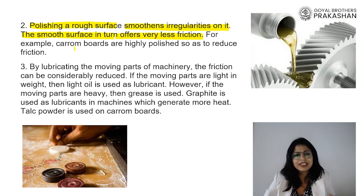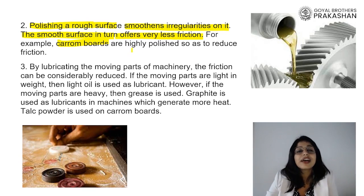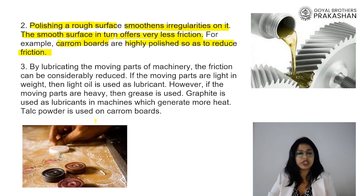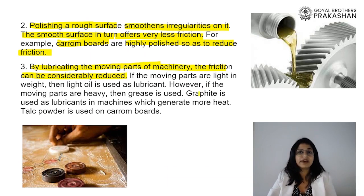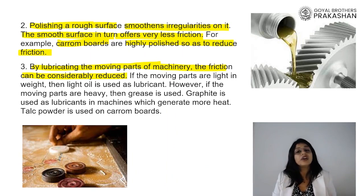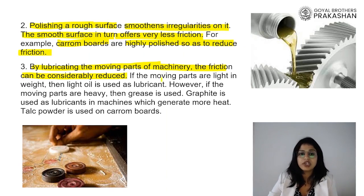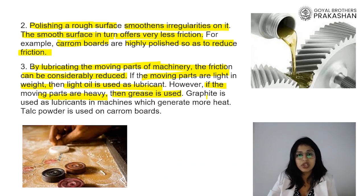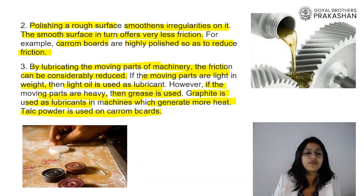In the game of carom board, talcum powder is put over the board to reduce friction so that the coins can move very easily — the board is highly polished so friction is reduced. Another method is lubrication. By lubricating the moving parts of machinery, friction can be reduced. Where gears come into contact, friction increases and generates heat that hampers machinery. Oil or lubricant is used to reduce friction and keep the machine running longer. Light oil is used for light moving parts, grease for heavy parts, and graphite for machines that generate more heat.